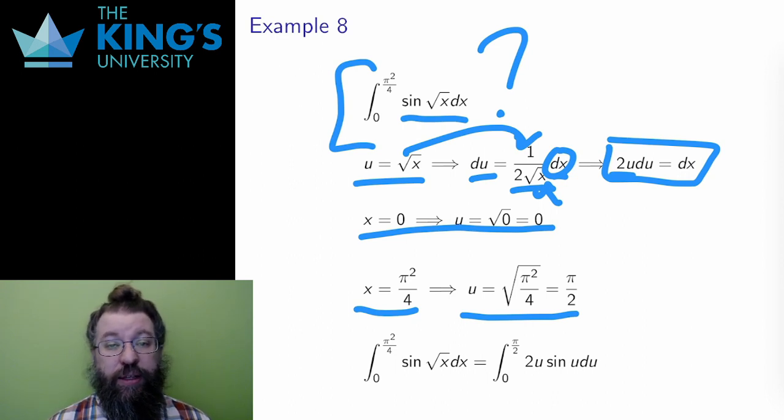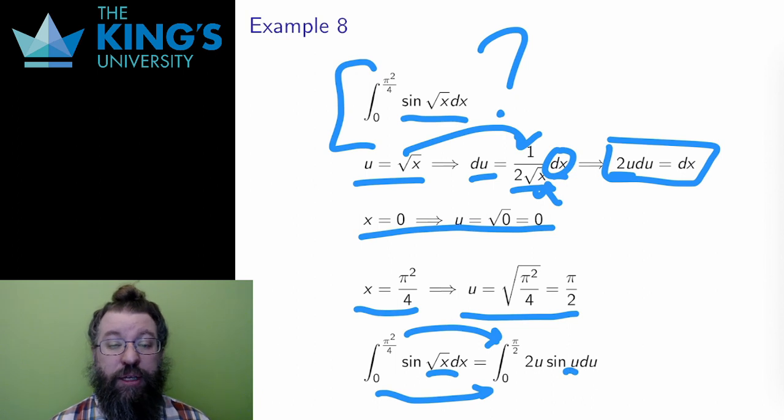Now I can change everything in the integral. Zero becomes zero, pi squared over four becomes pi over two, sine root x becomes sine u, and dx becomes two u du. And I'll write the du in front of the sine, as is usual notation.